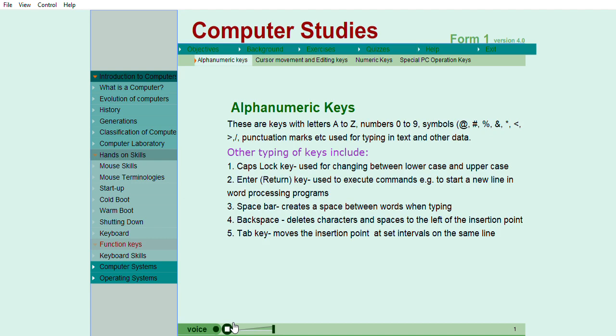Function of the keys: One, alphanumeric keys consist of letters, numbers, symbols, and punctuation marks. Other keys in this group include Caps Lock Key, used for changing between lowercase and uppercase; Enter or Return Key, used to execute commands and to start a new line in word processing programs; Space Bar, creates a space between words when typing; Backspace Key, deletes characters from the right to the left on the same line. Two, Tab Key moves the text cursor on set intervals.